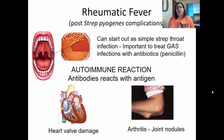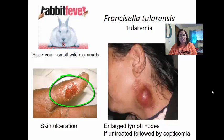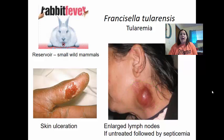Francisella tularensis causes tularemia, also known as rabbit fever. The reservoir is small wild mammals, particularly rabbits, making it a zoonotic disease. It can cause skin ulcerations, and if untreated, it can progress to enlarged lymph nodes followed by septicemia. The problem is that this bacteria reproduces inside your macrophages, which are main cells of your immune system. Treatment is tetracycline for about 10 to 15 days.